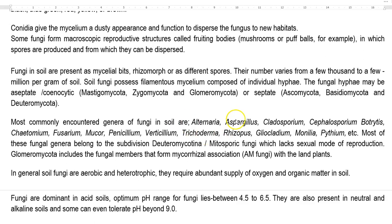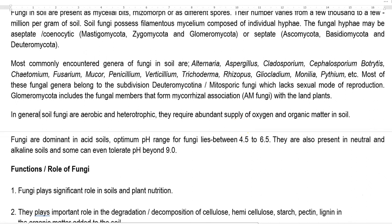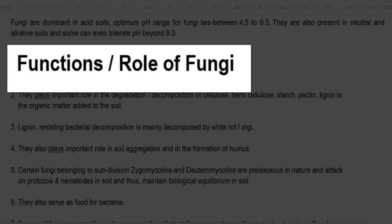In general, fungi are aerobic organisms, heterotrophic in nature, and require an abundant supply of oxygen and organic matter in the soil for best growth. Fungi commonly occur in acidic soils with an optimum pH range of around 4.5 to 6.5. They are also present in neutral and alkaline soils and can tolerate pH up to 9.